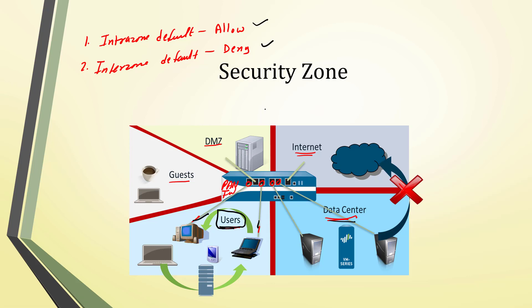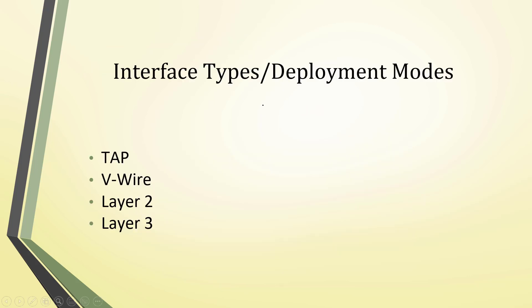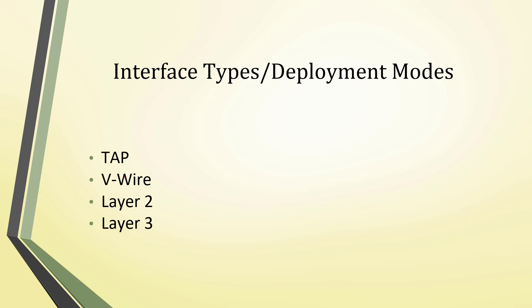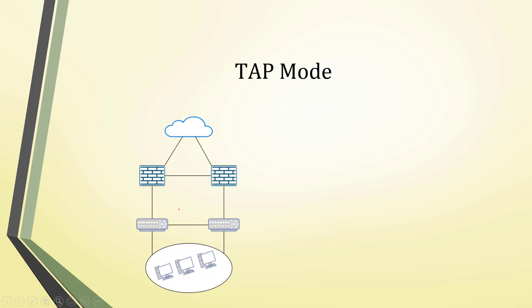Now we will discuss deployment modes, also called interface types, of Palo Alto Networks firewall. We have TAP mode, VWire mode, Layer 2 mode, and Layer 3 mode.